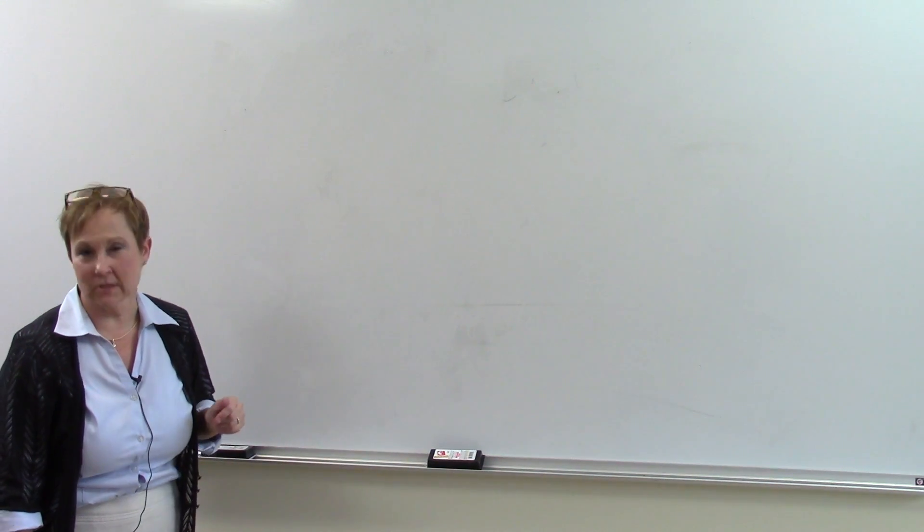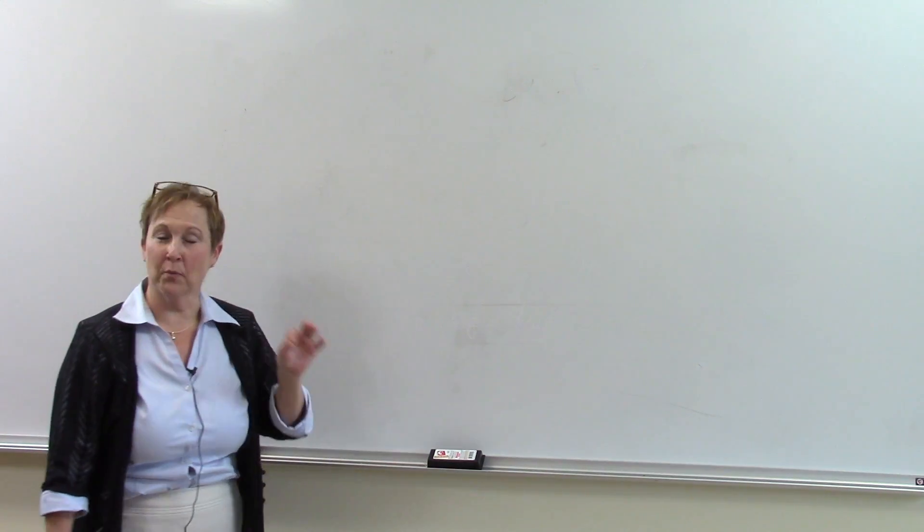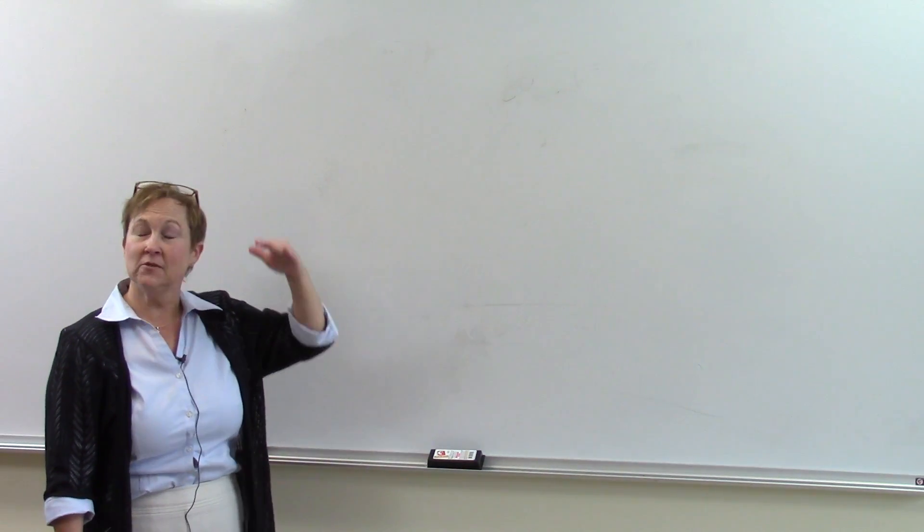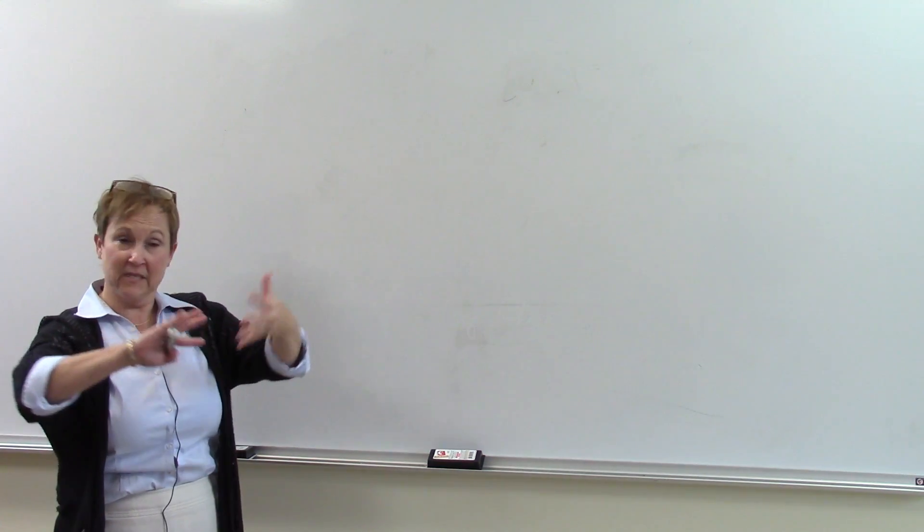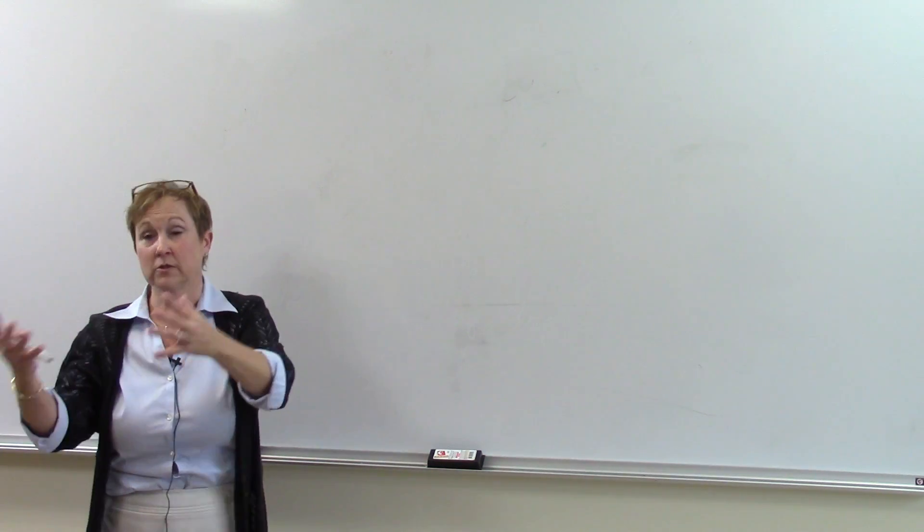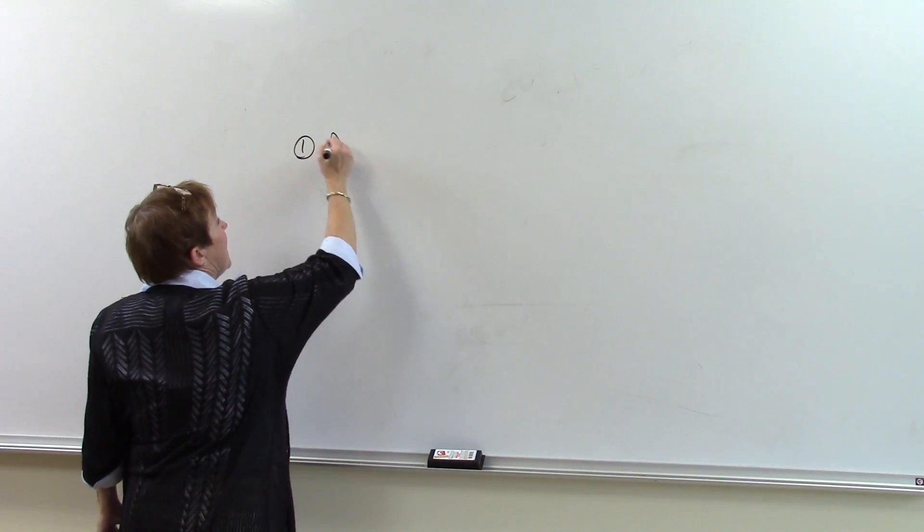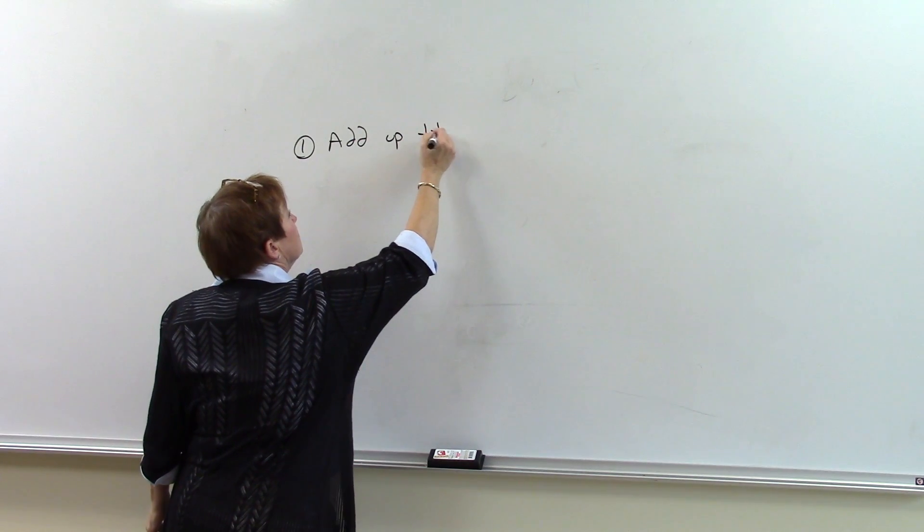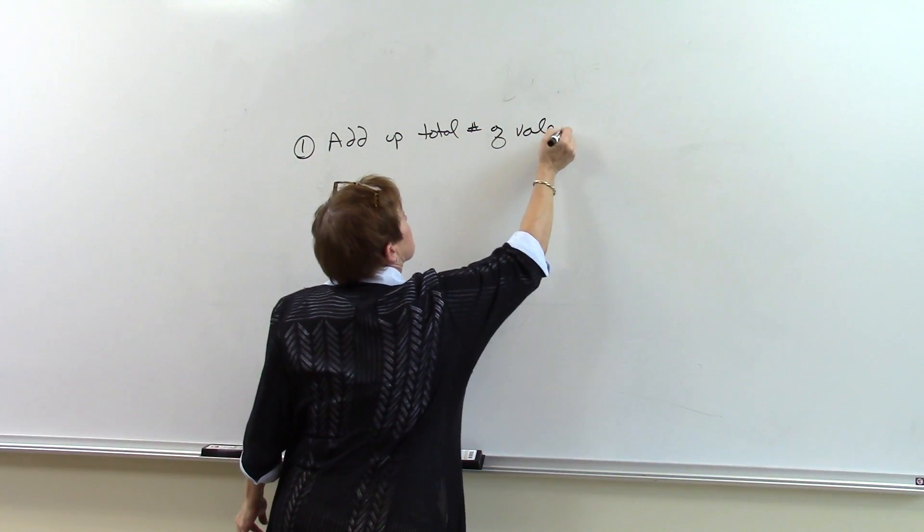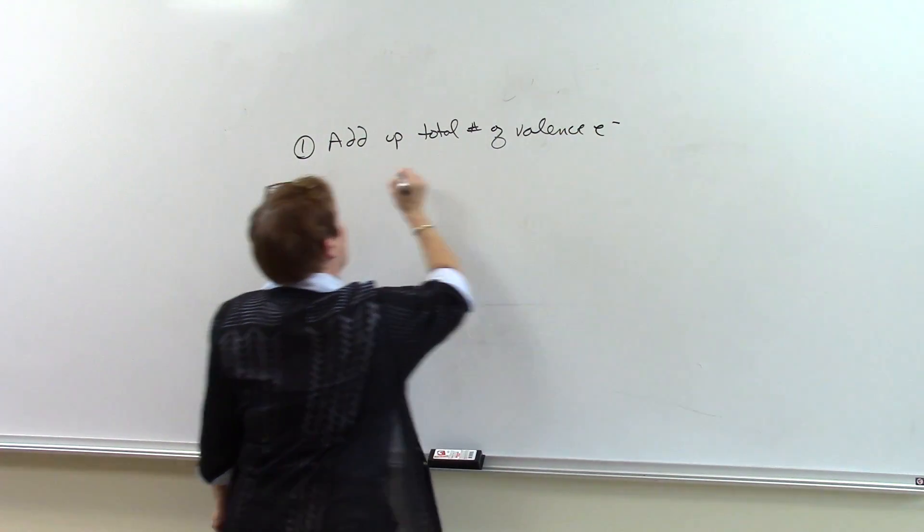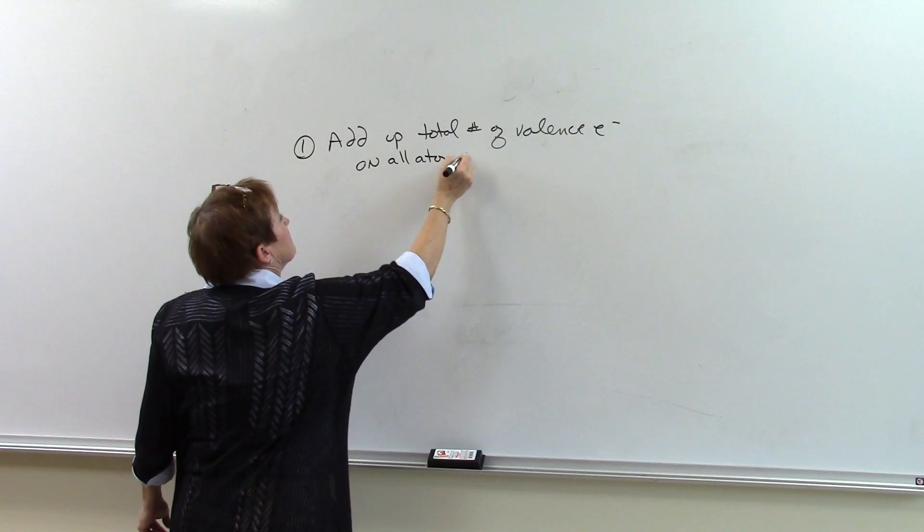Today we're going to draw Lewis structures. The thing about drawing Lewis structures is it's a process. You need to follow the rules in an orderly manner. You just don't try to fit things together. The first step is always add up the total number of valence electrons on all atoms in a molecule.